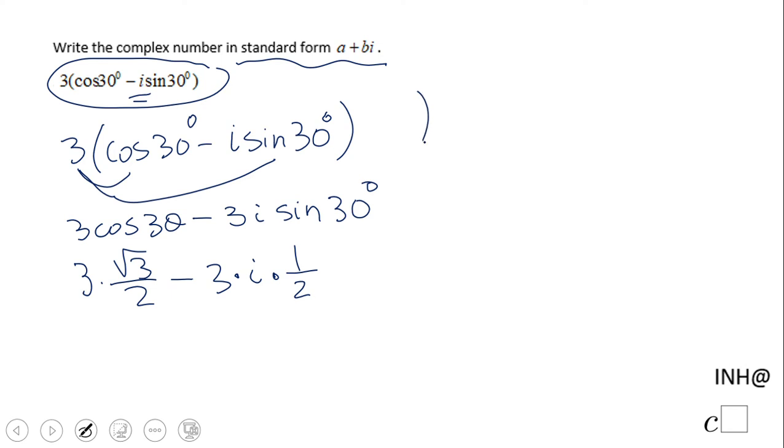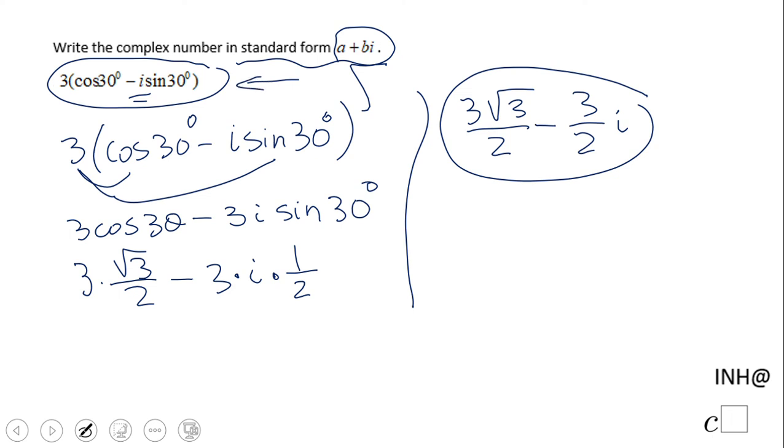The final form for us will be 3 square root of 3 over 2 minus 3i times 1/2. This is the a plus bi form, the standard form of this complex number which was in trigonometric or polar form.